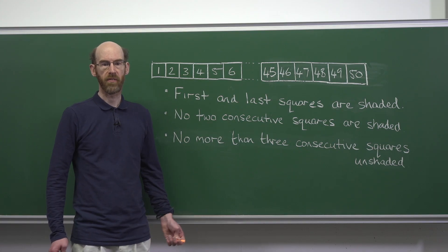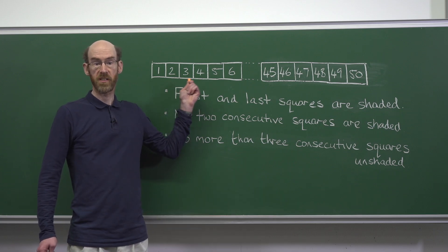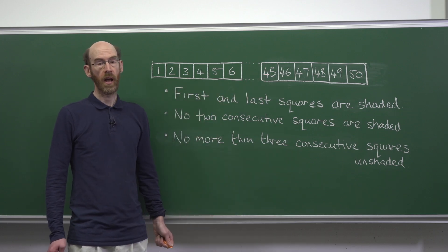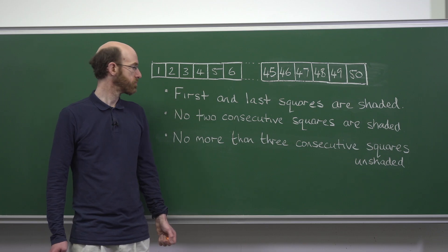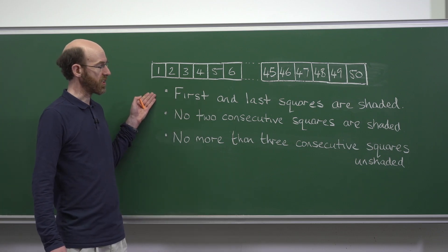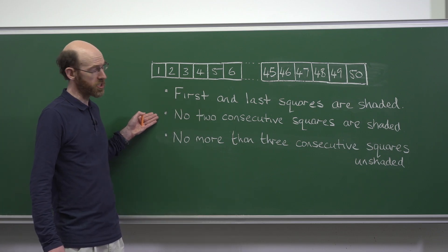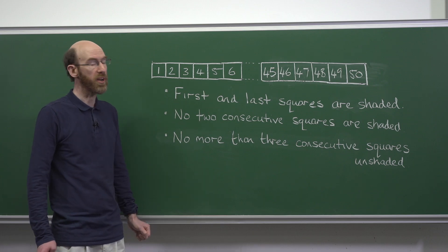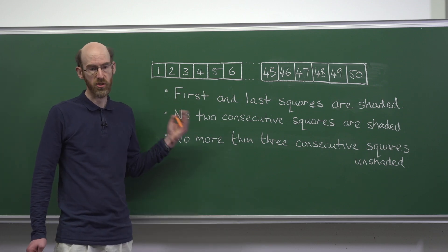In this question we are given a row of 50 squares and three rules. The first and last squares are shaded, no two consecutive squares are shaded, and no more than three consecutive squares are unshaded.